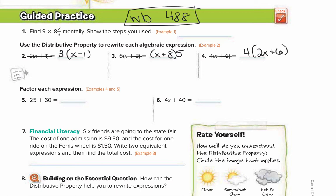For number 2, we're going to solve 3 times x minus 1 using the distributive property. So: 3 times x, but in this one we bring a minus sign, then 3 times 1. We get 3x minus 3. If you have a subtraction symbol in the middle, it's the same steps but you keep a subtraction in your answer: 3x minus 3. We cannot subtract something with a variable from something without.